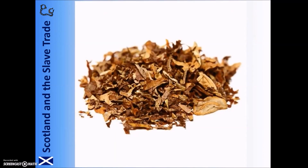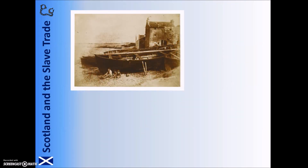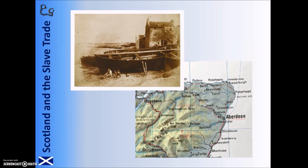People also had jobs in shops selling these various products to the public. Perhaps the least obvious jobs connection to slavery was in the fishing industry. Fishermen, especially in the north-east of Scotland in places like Montrose, caught fish such as herring that was then transported to Africa and the Americas as food for the slaves.